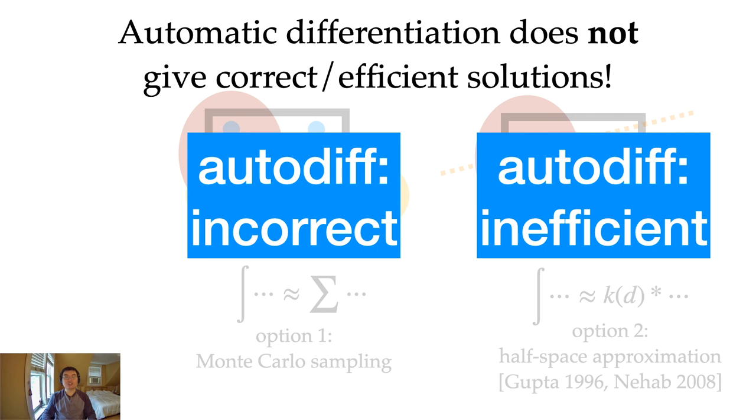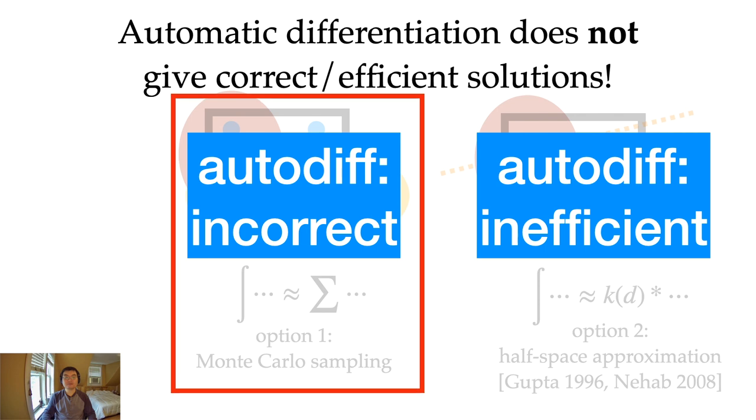Unfortunately, we cannot apply automatic differentiation to either of these two options. If we apply it to the Monte Carlo sampling method, we get incorrect derivatives. If we apply it to half-space approximation, we get the correct derivatives, but it will use an enormous amount of memory. I will discuss why this is the case for Monte Carlo sampling first, and how we deal with it.